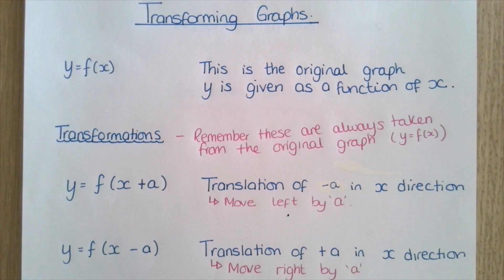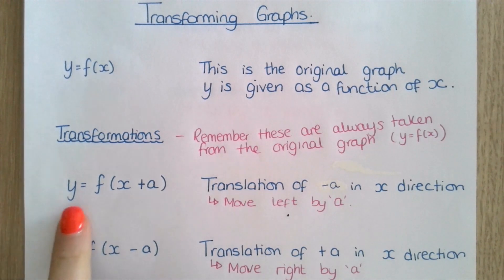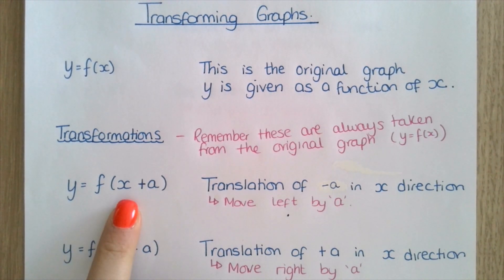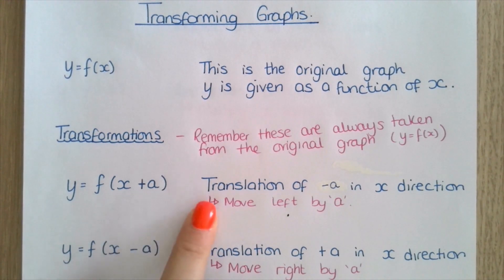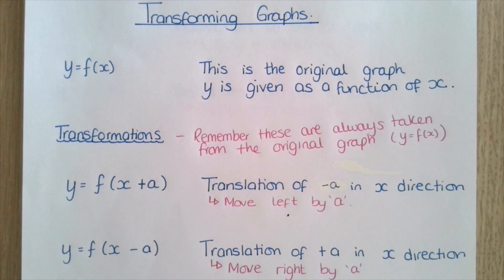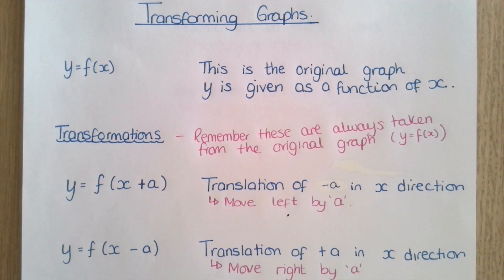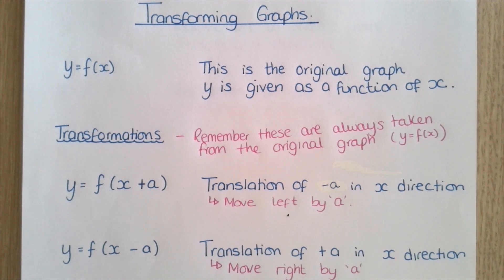The first transformation is y equals f of x plus a, where the plus a is in brackets. What this means is you have a translation of minus a in the x direction. Ultimately, your graph will move left by whatever your value of a is. An easy way to work this out is to subtract the value of a from the x coordinates given on the graph of y equals f of x.